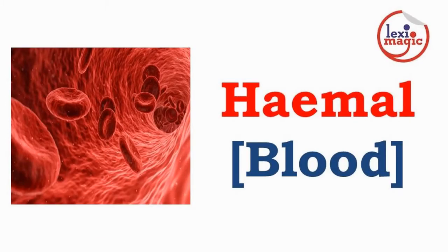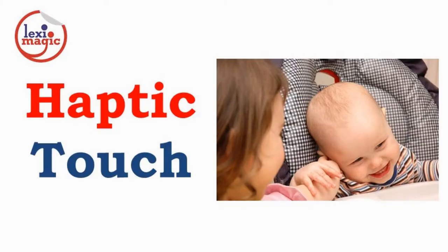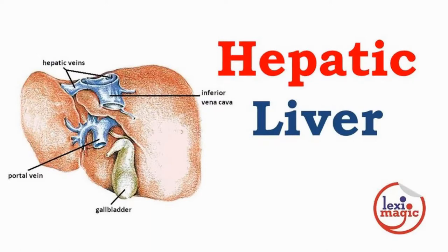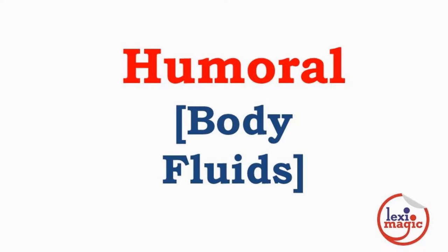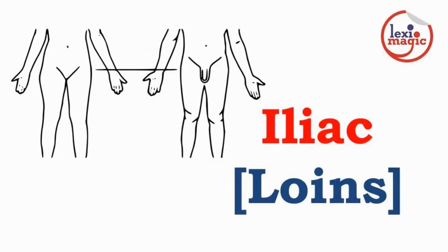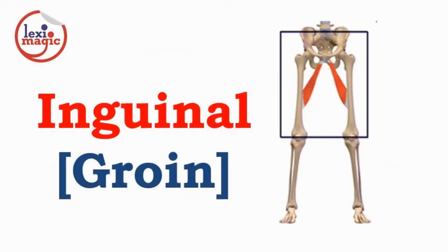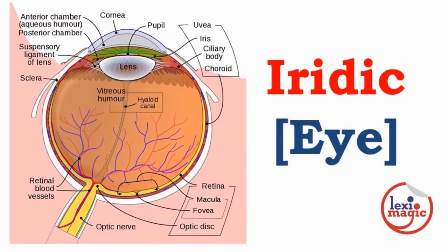Hemal refers to blood. Haptic refers to the sense of touch. Hepatic refers to the liver. Humoral refers to body fluids. Iliac refers to the loins. Inguinal refers to the groin. Iridic refers to the eye.